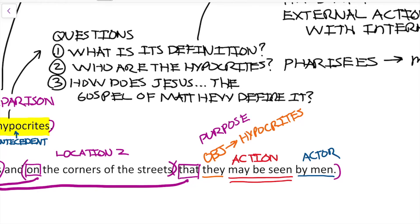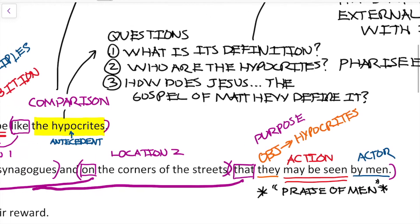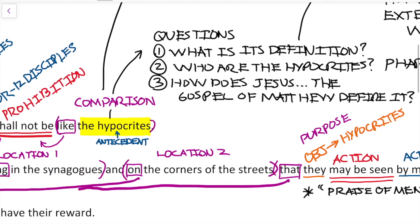Let's quickly restate this. What is a simple paraphrase? If you recall from the word search in Matthew 6:2, we had a parallel context that used the phrase 'praise of men.' That's really what the purpose is. The purpose of what hypocrites pray in the synagogues and on the street corners is for the praise of men.